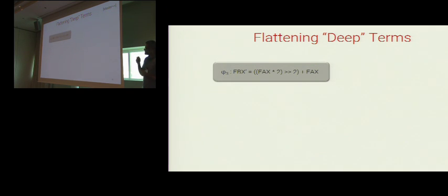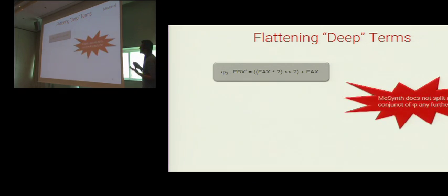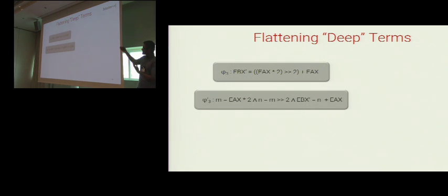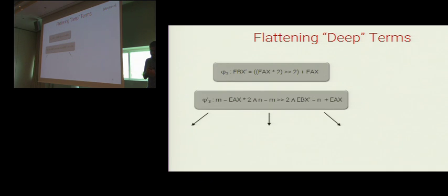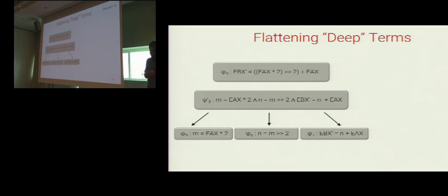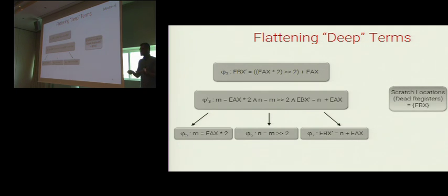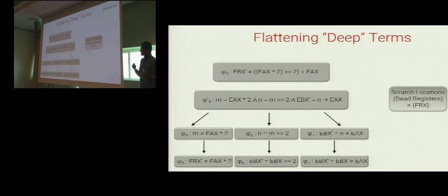Now consider sub-formula phi 3. It contains what we call a deep term — a term with a deep abstract syntax tree (AST). MixSynth does not attempt to split such deep terms further. Using extra symbolic constants m and n, one can rewrite phi 3 into phi 3 prime — these two formulas are equi-satisfiable. MixSynth++ then splits phi 3 prime into a sequence of individual sub-formulas. If the user provides scratch registers — usually dead registers at the point where code is to be synthesized — MixSynth++ does register reassignment on these individual sub-formulas. In this manner, MixSynth++ flattens a deep term into a sequence of individual sub-formulas.